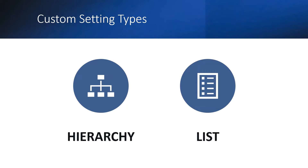List is like custom metadata only. Hierarchy custom setting type is also like custom metadata. If you want to enable the list custom setting type, you have to do some settings in the org — you have to enable it — because by default it's not available in the Salesforce org. We will discuss that later in this video.